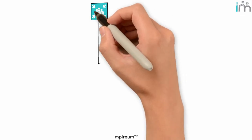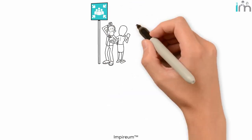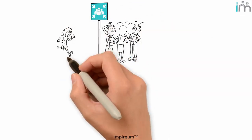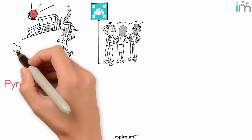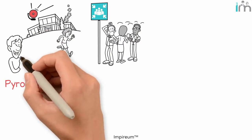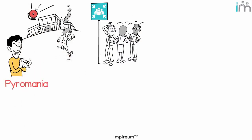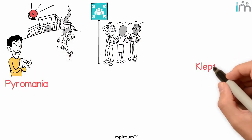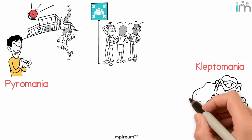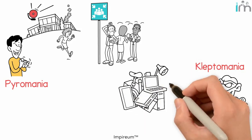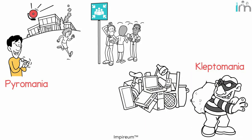Two less common but very serious disorders are pyromania, where a person is compelled to set fires, and kleptomania, which drives people to steal things they don't even necessarily want or need.